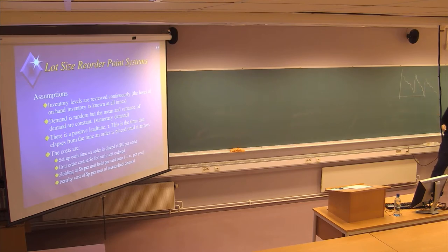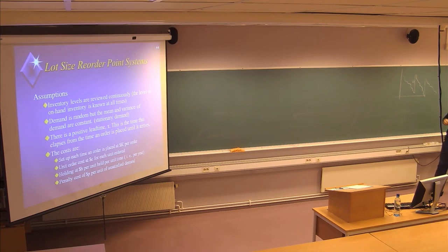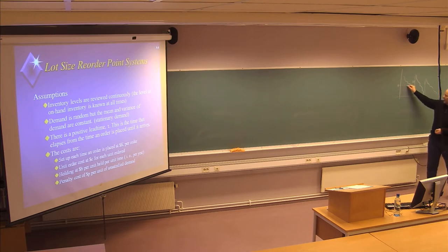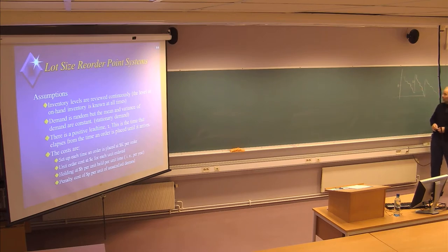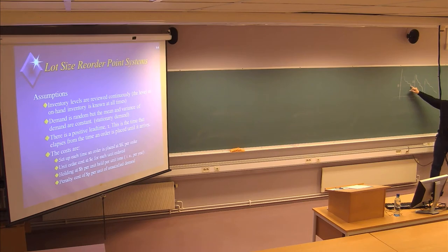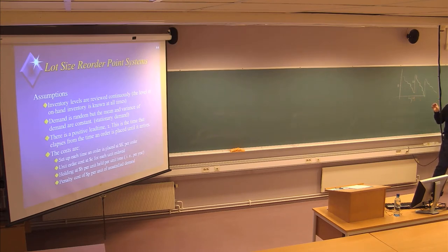We are talking about the order size, denoted as Q, but we are also talking about a reorder point R. When we have a certain amount of inventory on stock, we should place a new order — a reorder — because we have a lead time: the time between when the order is placed and when the delivery is done. So we need to decide about two variables: both the order size Q and the reorder point R.